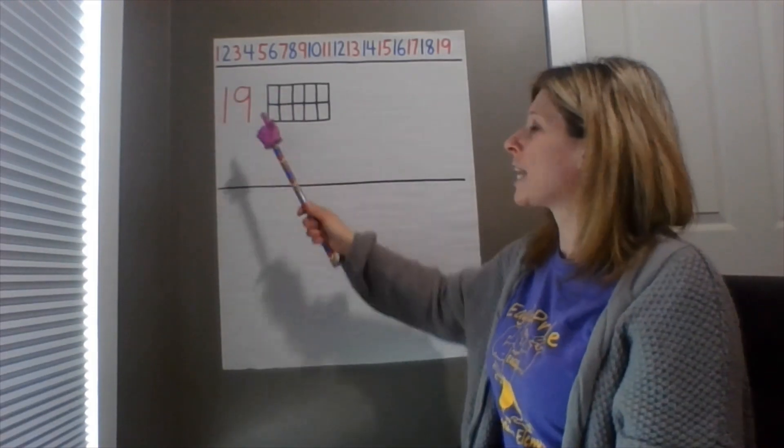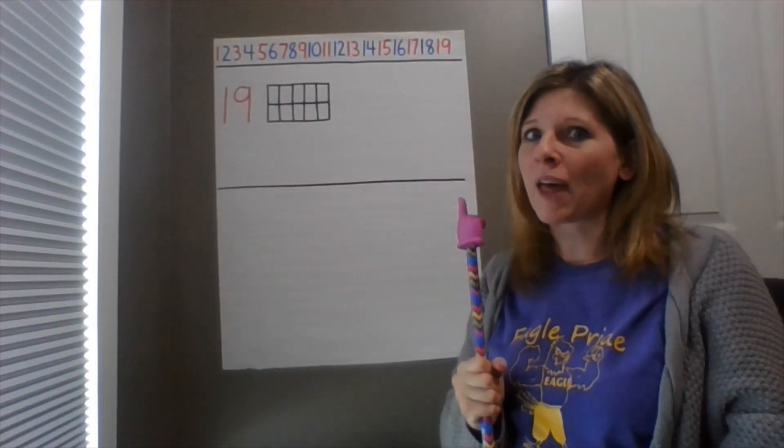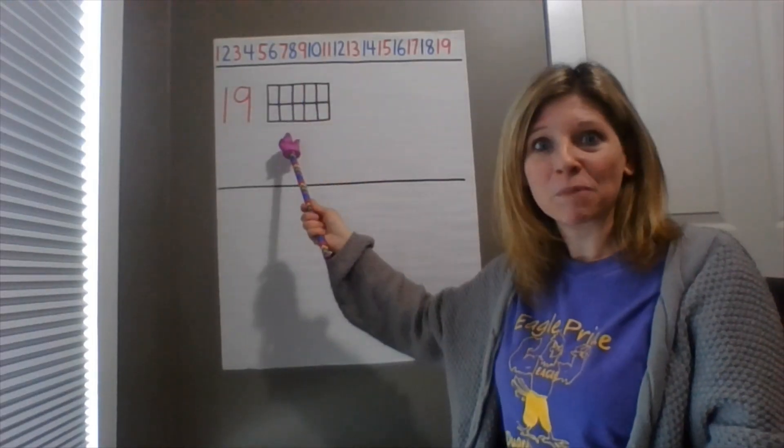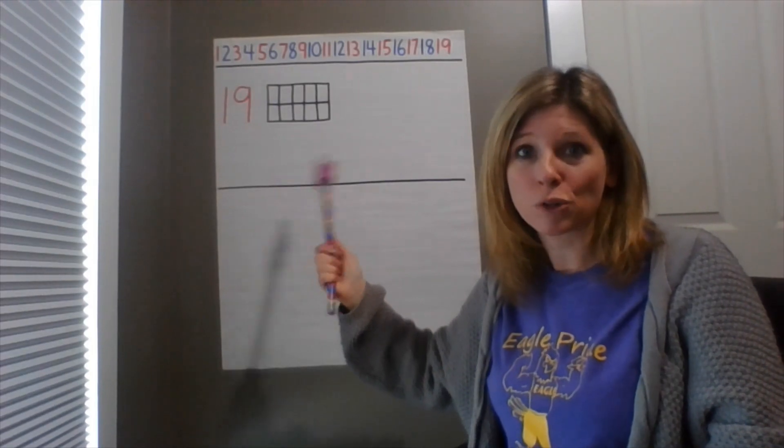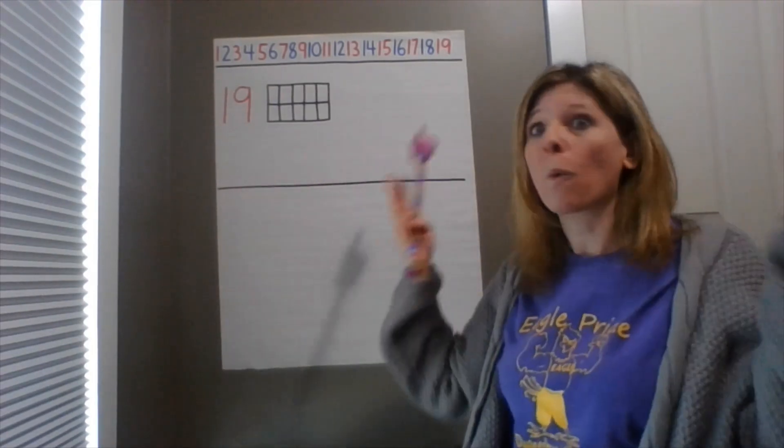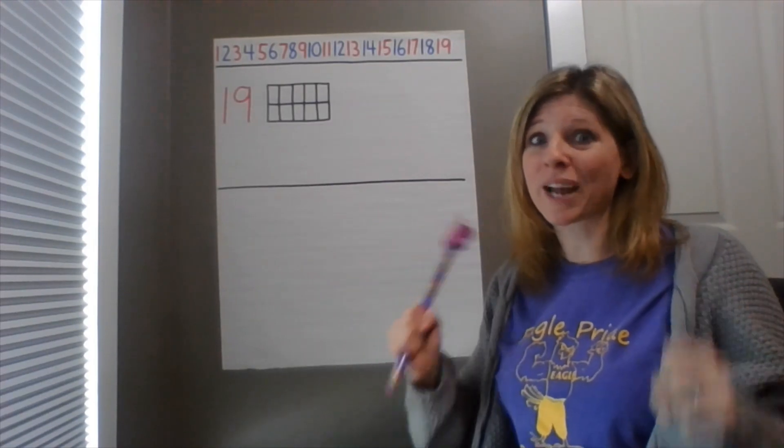All right, so we're going to talk about 19. What is 19? Well, before we start with that, make sure you have your 10 frame. You need at least 19 objects to use as counters so that you can help us figure out what is 19. So make sure you have those things so that you are ready to learn.